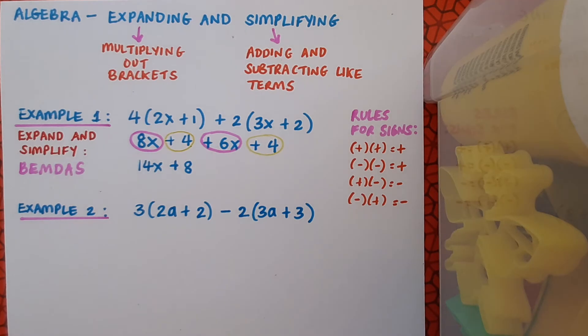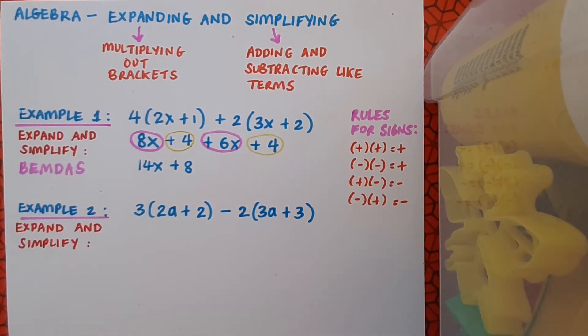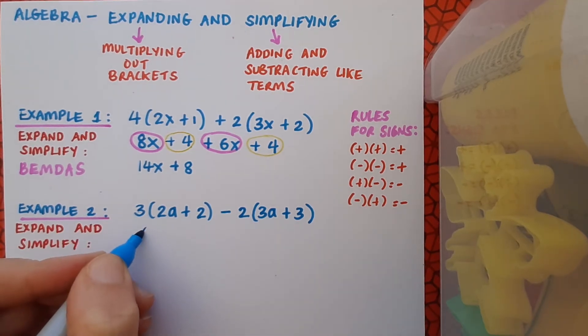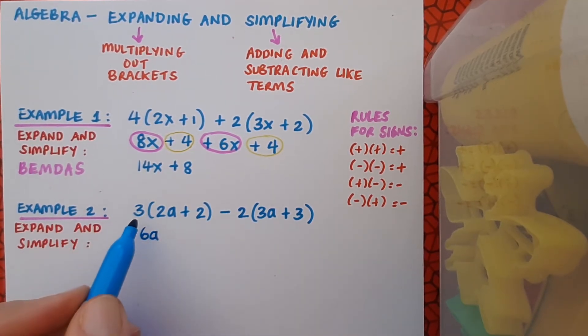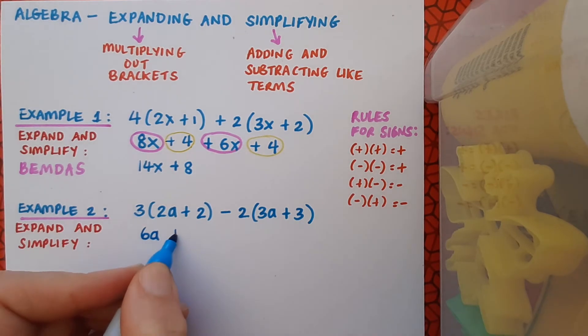Here's a second example. Again, my instructions are to expand and simplify. So first of all, the expansion. That means 3 times this bracket, so 3 by 2a is going to give me 6a, and 3 by 2 is going to give me plus 6.